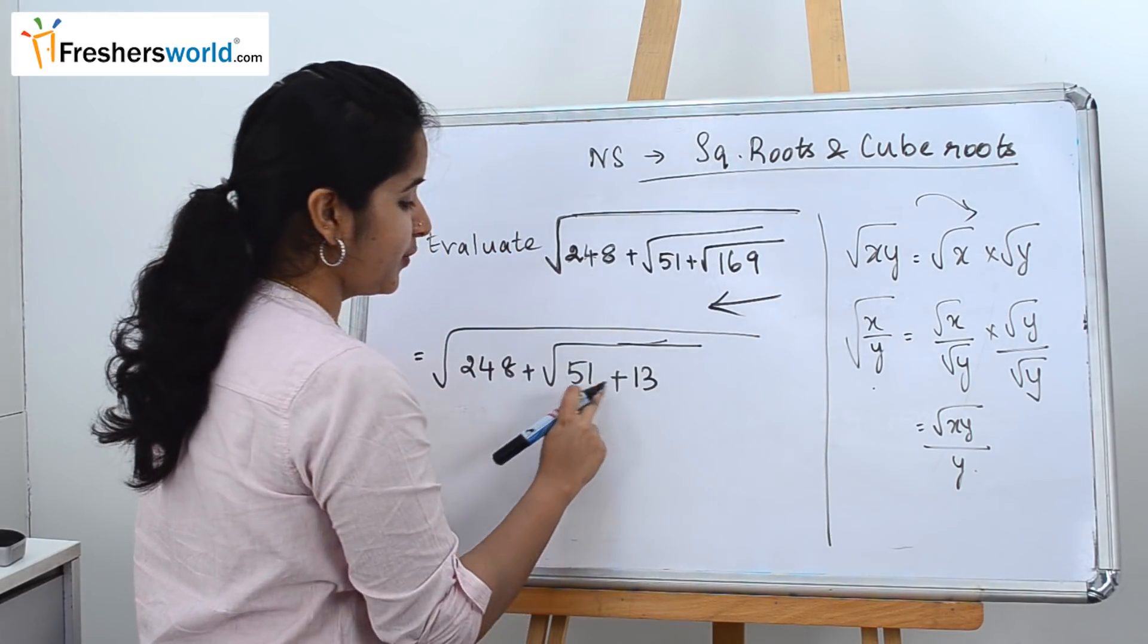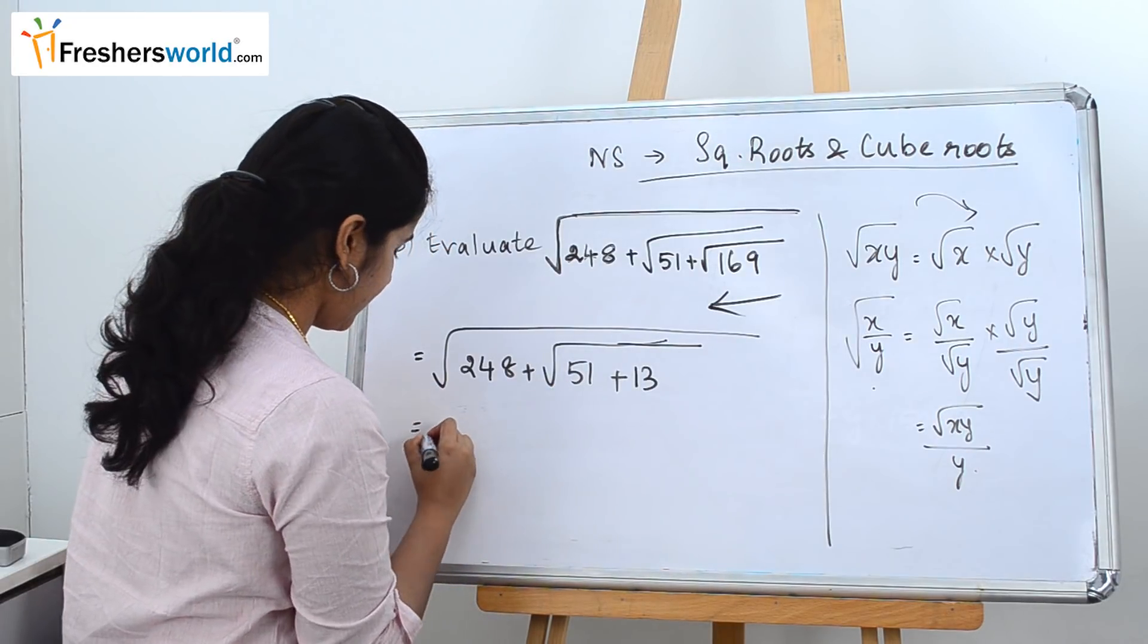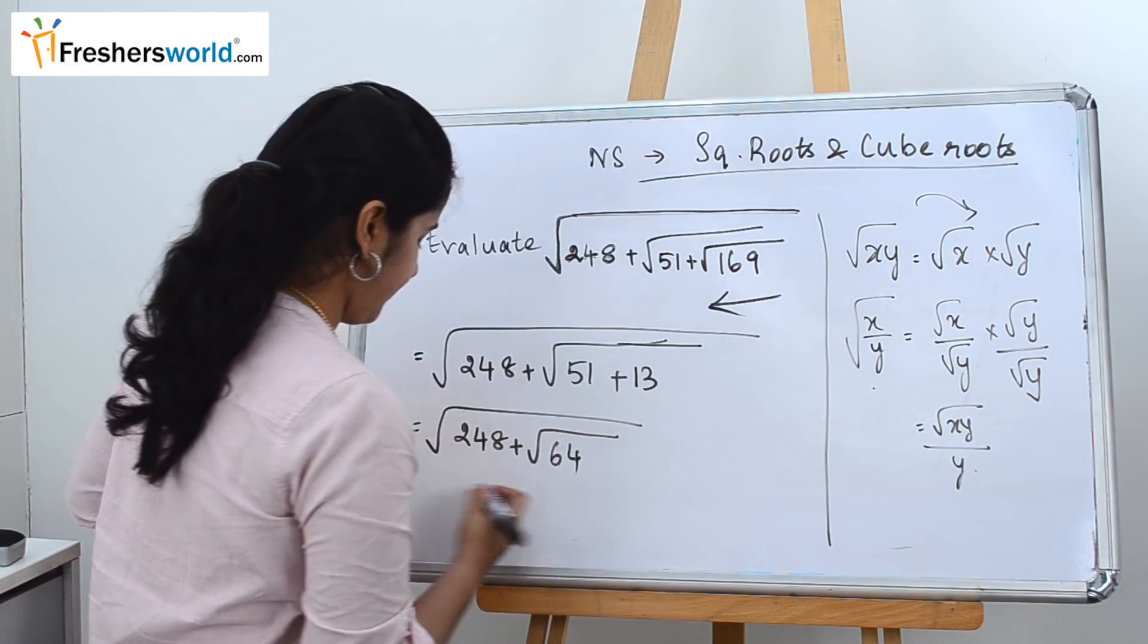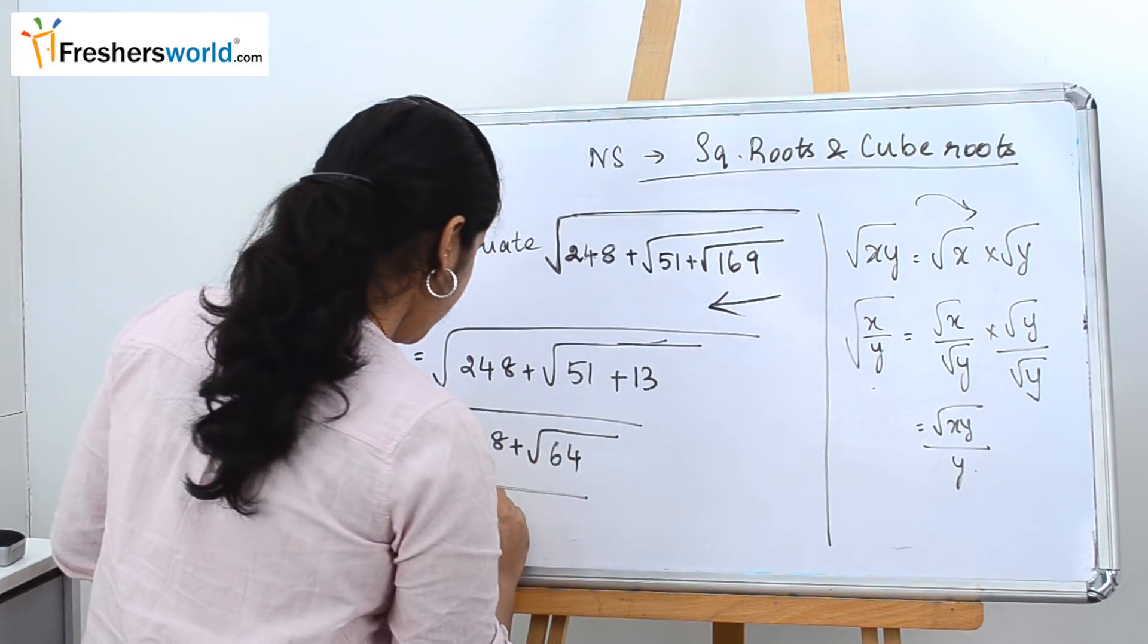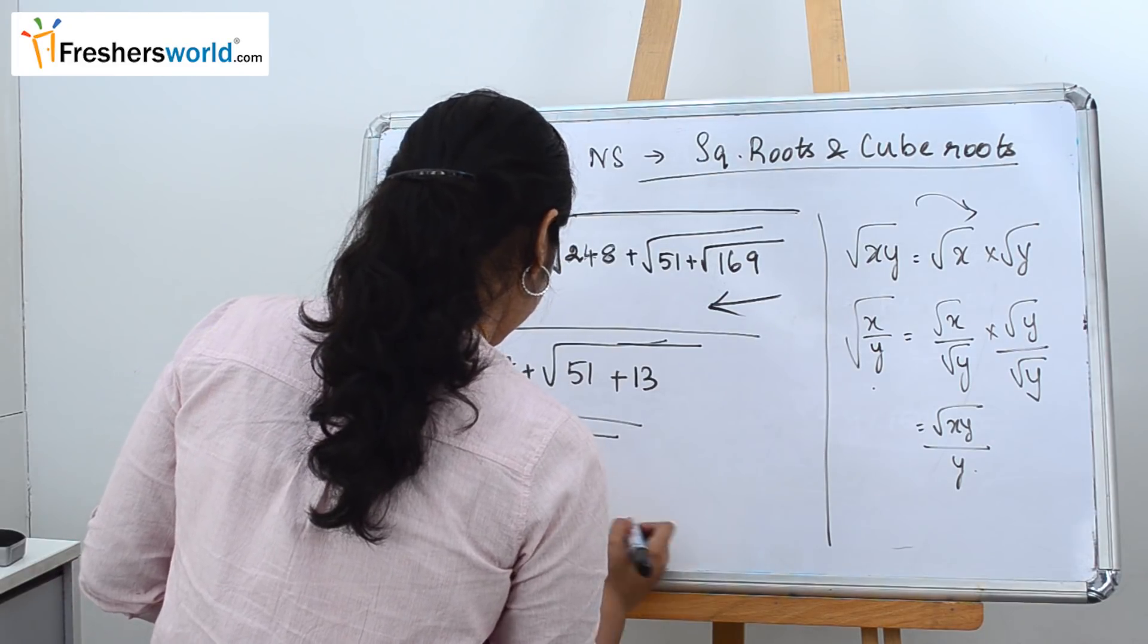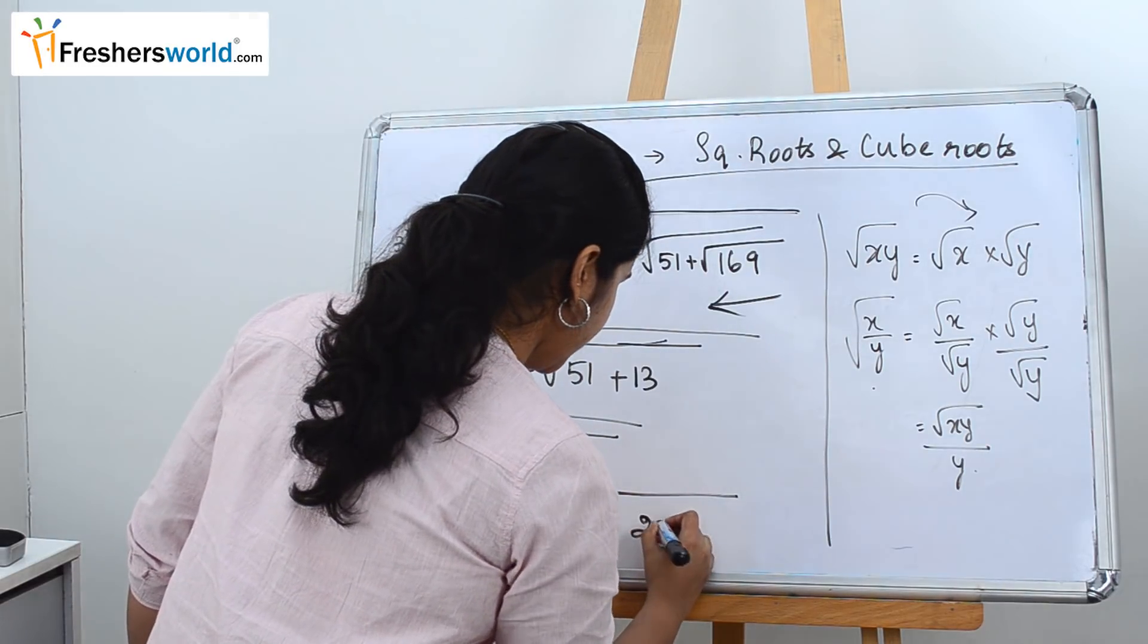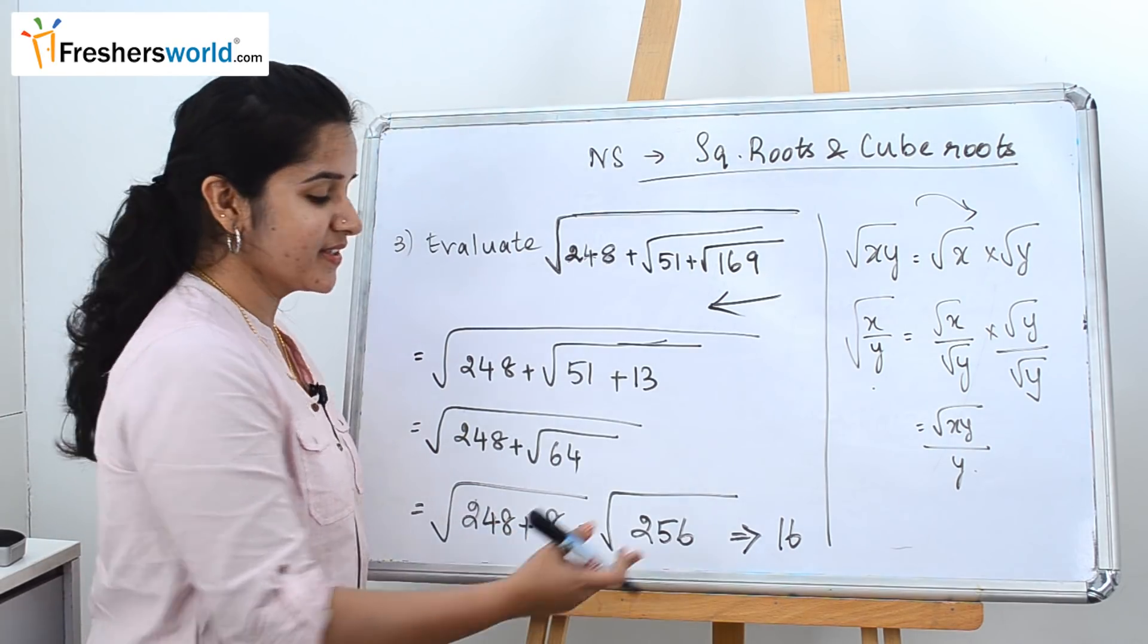So it becomes 51 plus 13. 51 plus 13 is nothing but 64. So write it in the next step: 248 plus square root of 64. We know square root of 64 is nothing but 8. So it becomes 248 plus 8. So add it: 248 plus 8 is nothing but 256. The square root of 256 is nothing but 16.